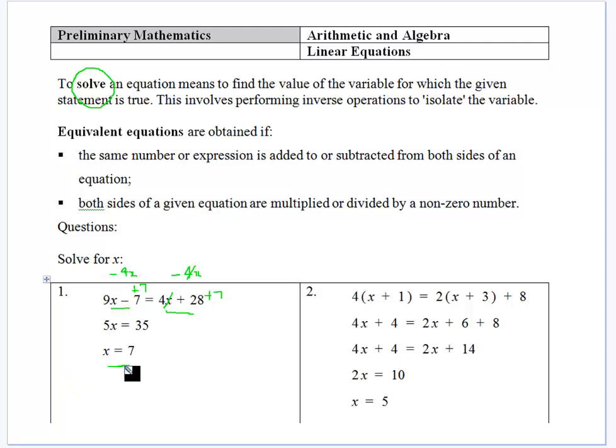And you can check that you're right. That's the nice thing about equations. You can check that you are correct because you can put 7 in and go 9 sevens are 63 minus 7, that's 56. 4 sevens are 28 plus 28, that gives me 56. That works. It satisfies the equation. So it is giving us, and we've found the value that makes the equation true.